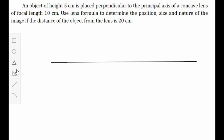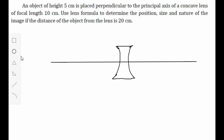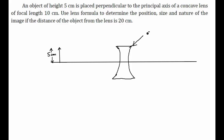Let our principal axis be this. Now let's draw a concave lens here. Let's draw our object, whose height is 5 centimeters, placed in front of the lens.